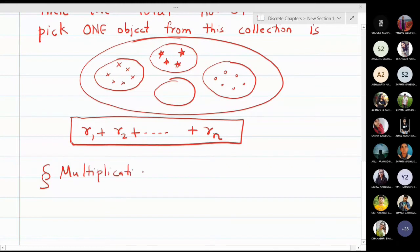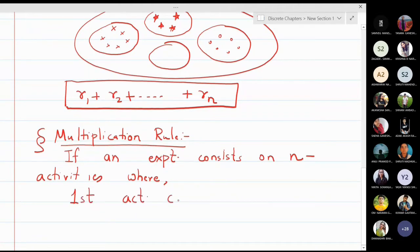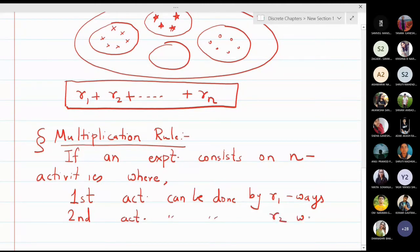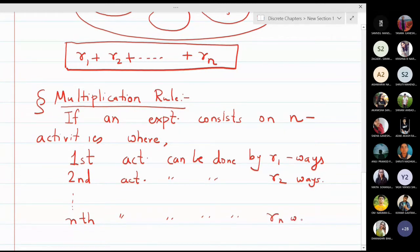Now let us write what the multiplication rule is. In the multiplication rule, suppose I have an experiment. If an experiment consists of n activities, where the first activity can be done in r1 different ways, the second activity can be done in r2 ways, and so on, the nth activity can be done in rn number of ways.